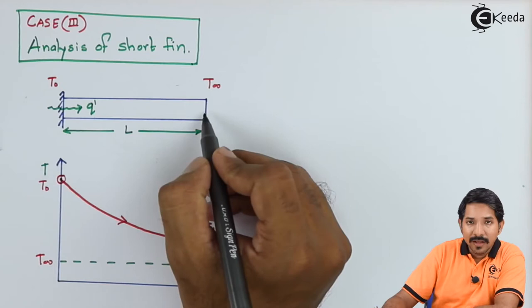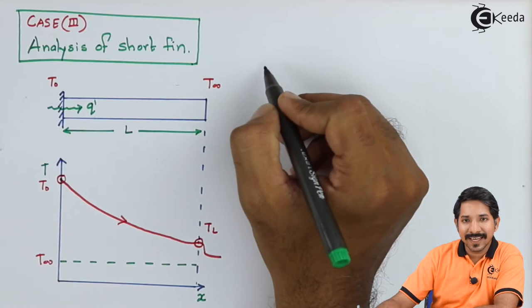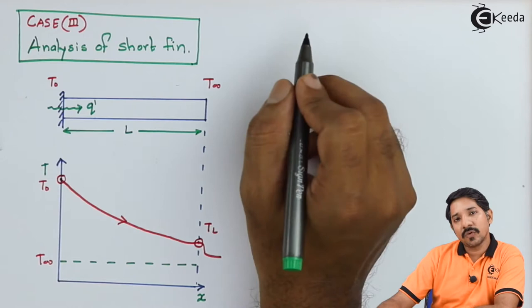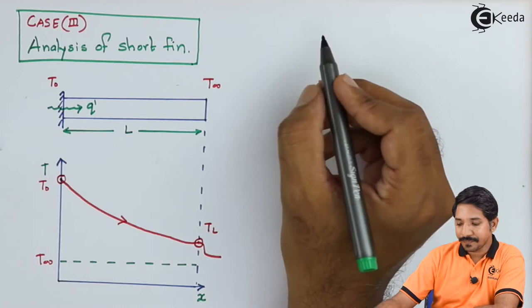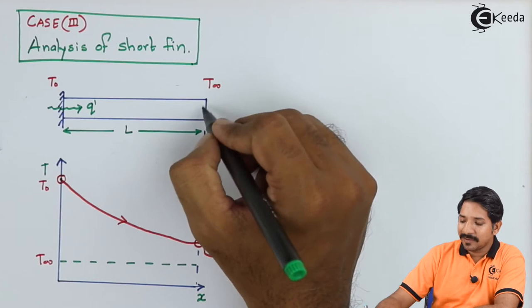Previously we had seen in the first case that the fin was infinitely long, so at x equal to infinity, the temperature was as good as the temperature of ambient air or the fluid — we wrote at x equal to L, T equal to T infinity. In the second case, we had considered that the tip was insulated, so dT by dx at x equal to L is 0. Now in this third case, the first boundary condition will remain the same; only the second boundary condition will change.